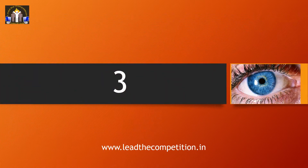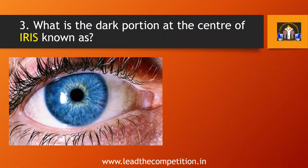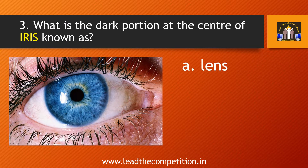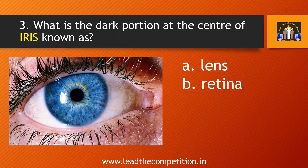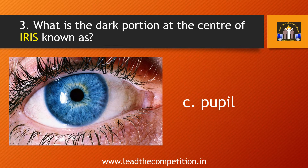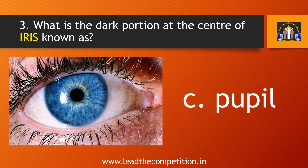Question number 3. What is the dark portion at the center of iris known as? A. Lens, B. Retina, C. Pupil, or D. Cornea. The answer is C. Pupil.